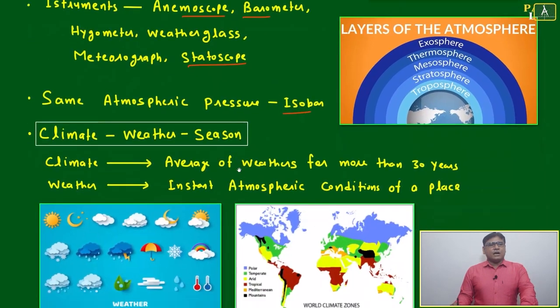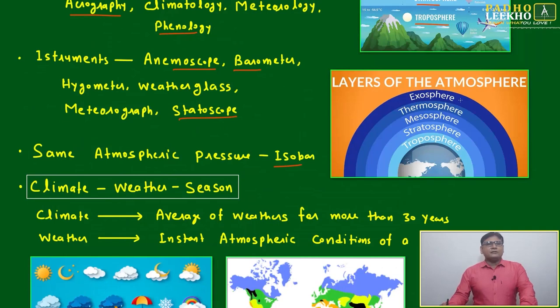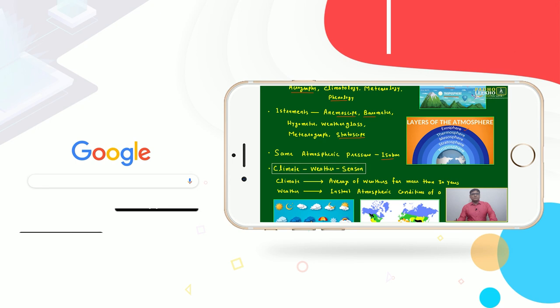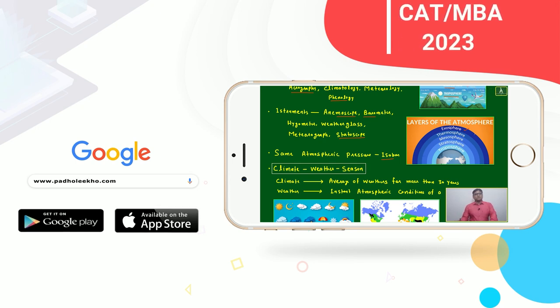Same atmospheric pressure is called isobar. You can see in a round way it looks good: exosphere, thermosphere, mesosphere, stratosphere, troposphere - all these are making a good atmosphere.